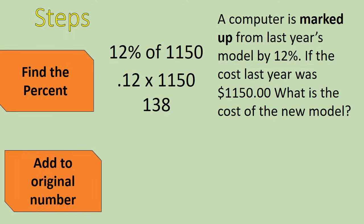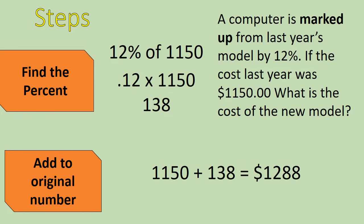So now I have to add it to the original amount. This is where you would have to decide: am I adding, am I subtracting? We look at the word 'marked up' to know that we will be adding this 12% to the cost. My original cost plus the increased amount will give me my final answer — the new computer cost for the latest model: $1,288.